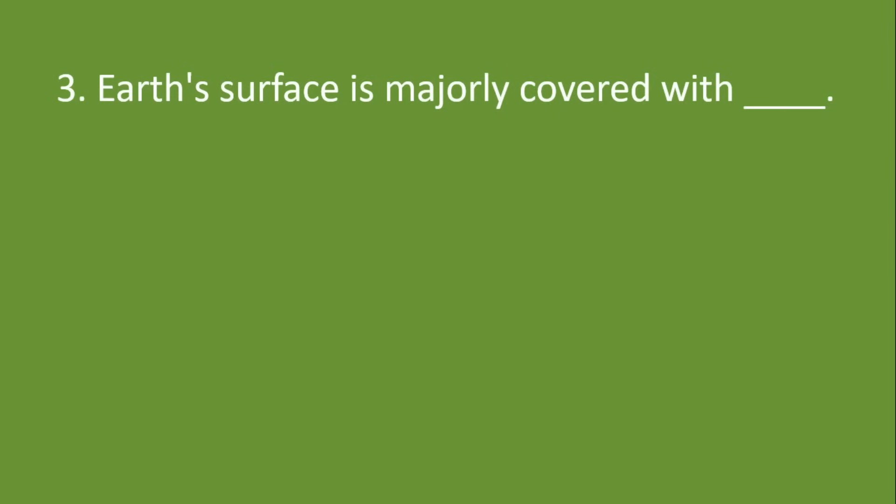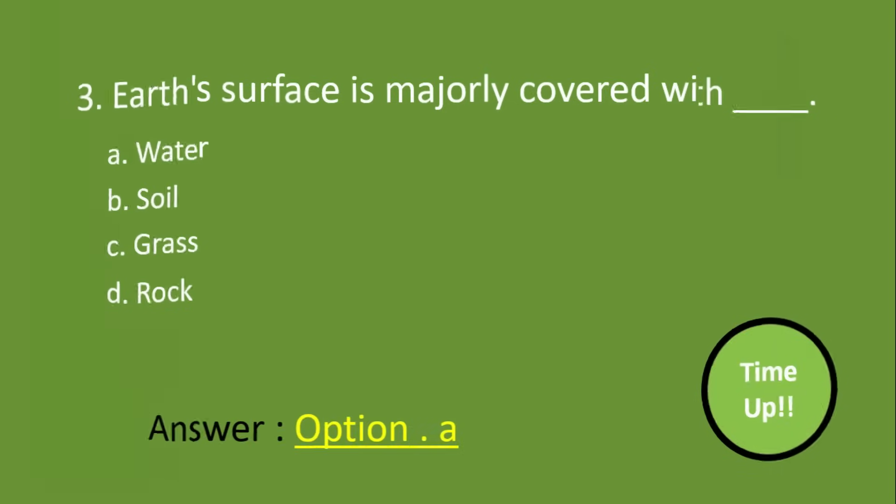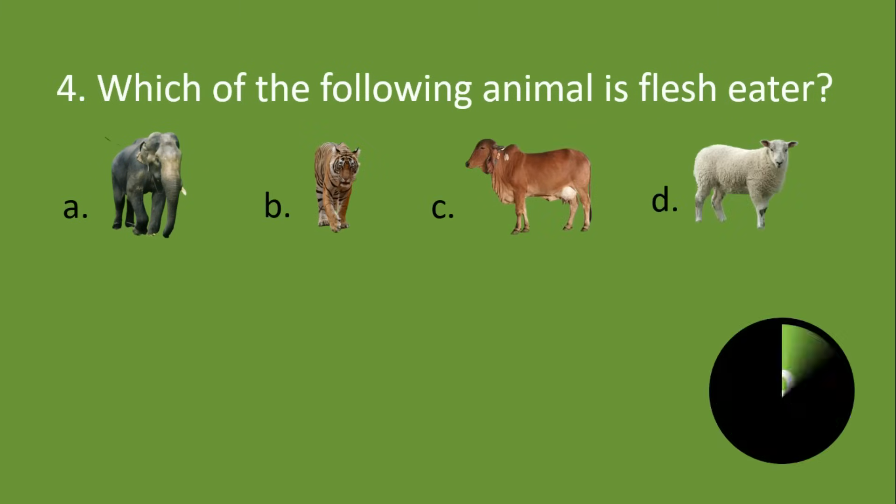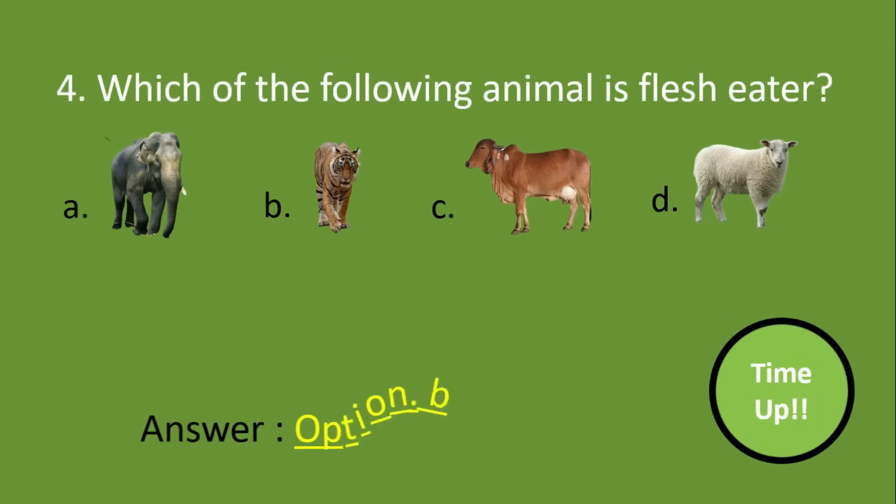Earth's surface is majorly covered with: A. Water, B. Soil, C. Grass, D. Rock. Answer is option A. Which of the following animal is a flesh eater? Answer is option B.